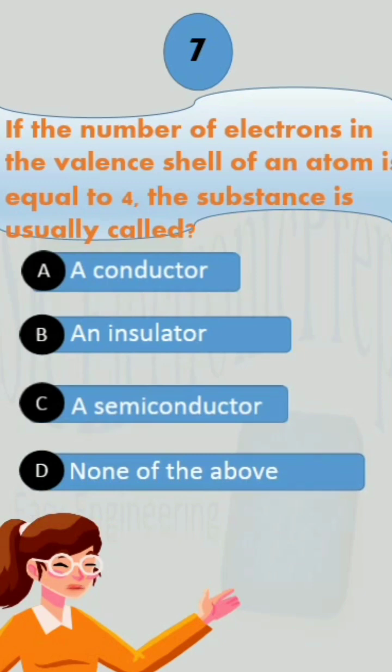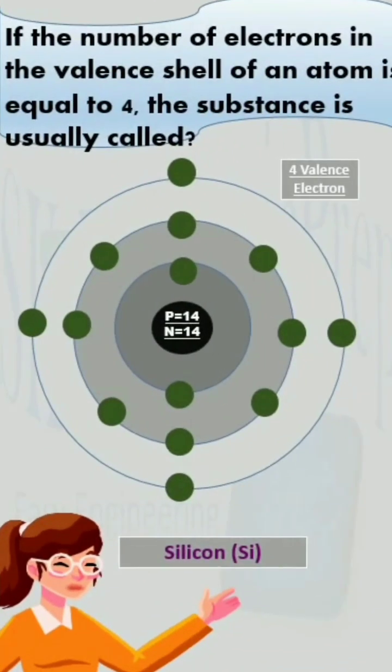Semiconductors are substances with conductivity intermediate between insulators and conductors, which are typically metals such as ceramics. Semiconductors can be pure elements like germanium or silicon or compounds like gallium arsenide.